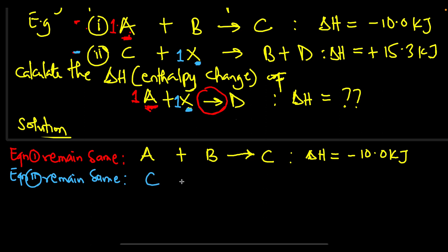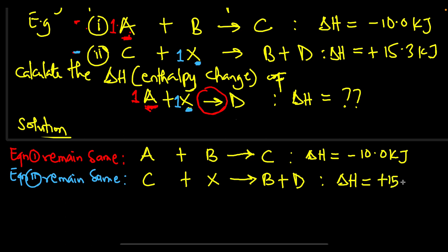Equation 2 remains the same, so we bring it down as C + X → B + D, with delta H = plus 15.3 kilojoules. Note that D is also present in equation 2 — since both X and D are in the same equation 2, bringing down equation 2 takes care of both. D is on the product side with one mole in both the overall equation and equation 2.